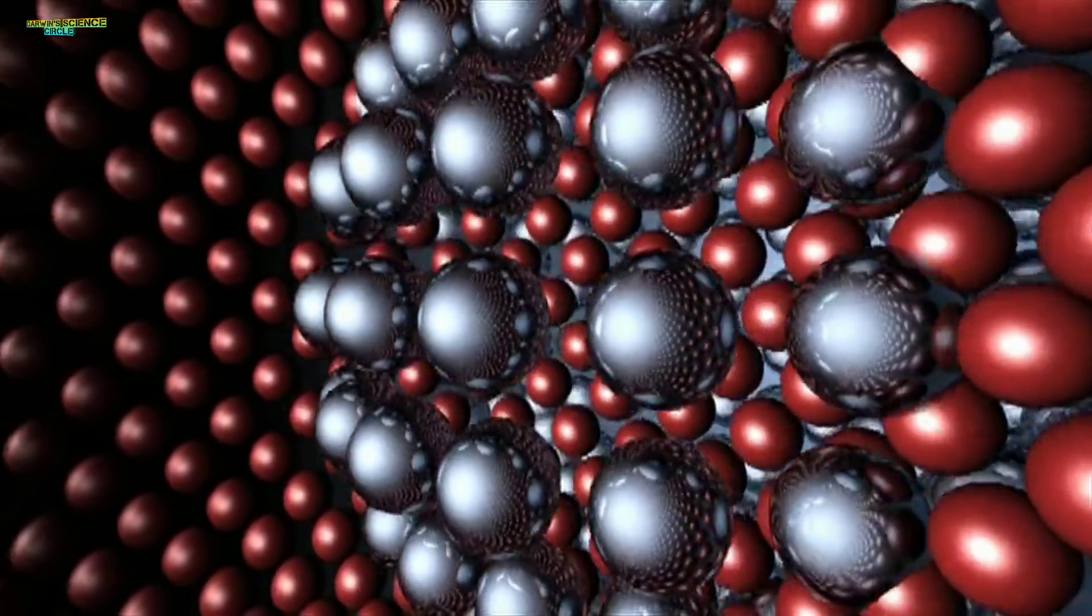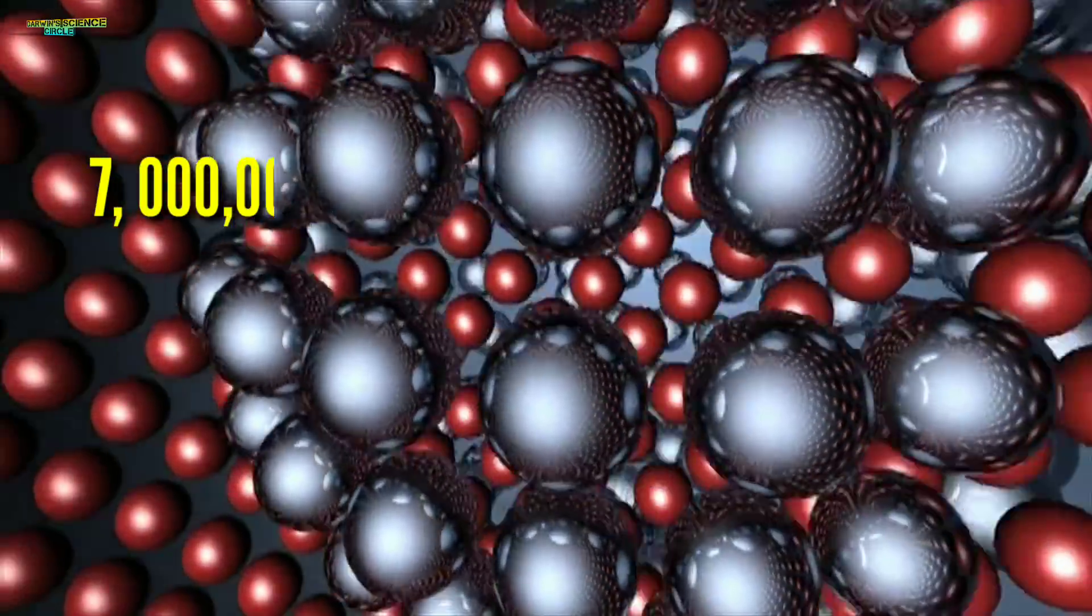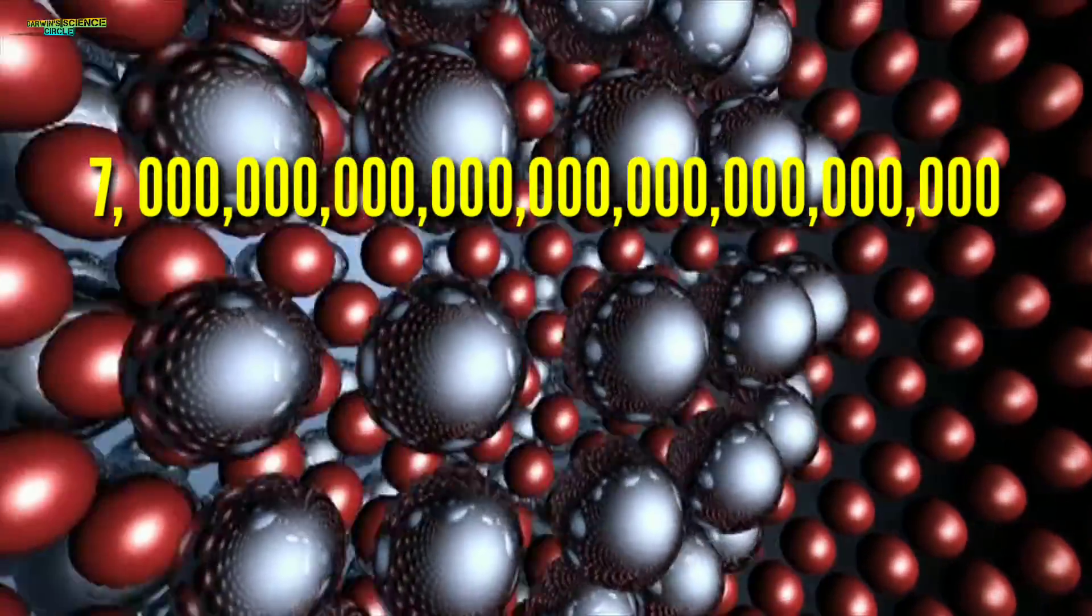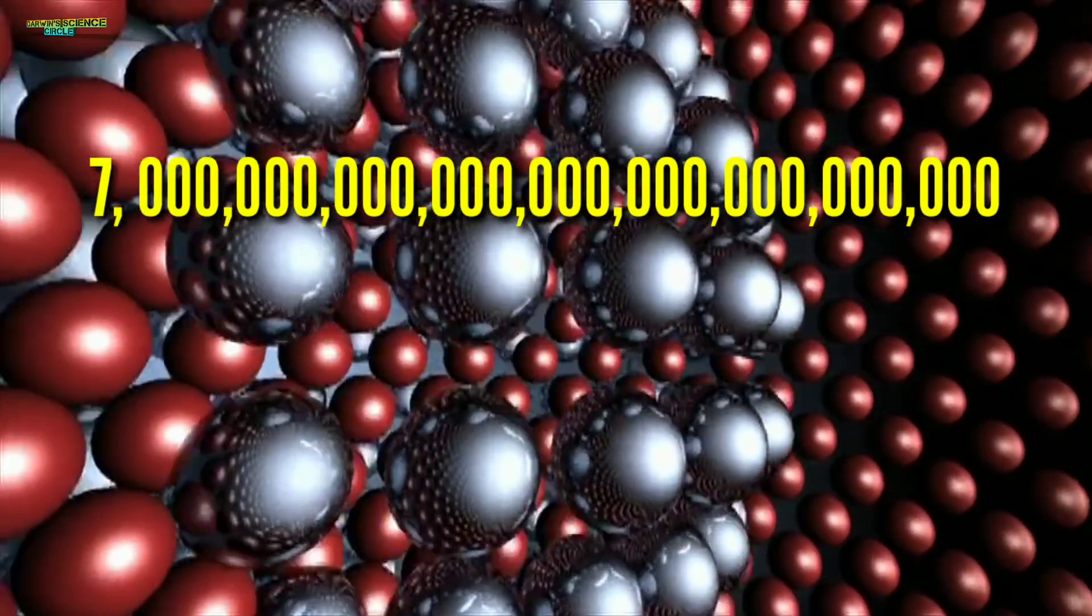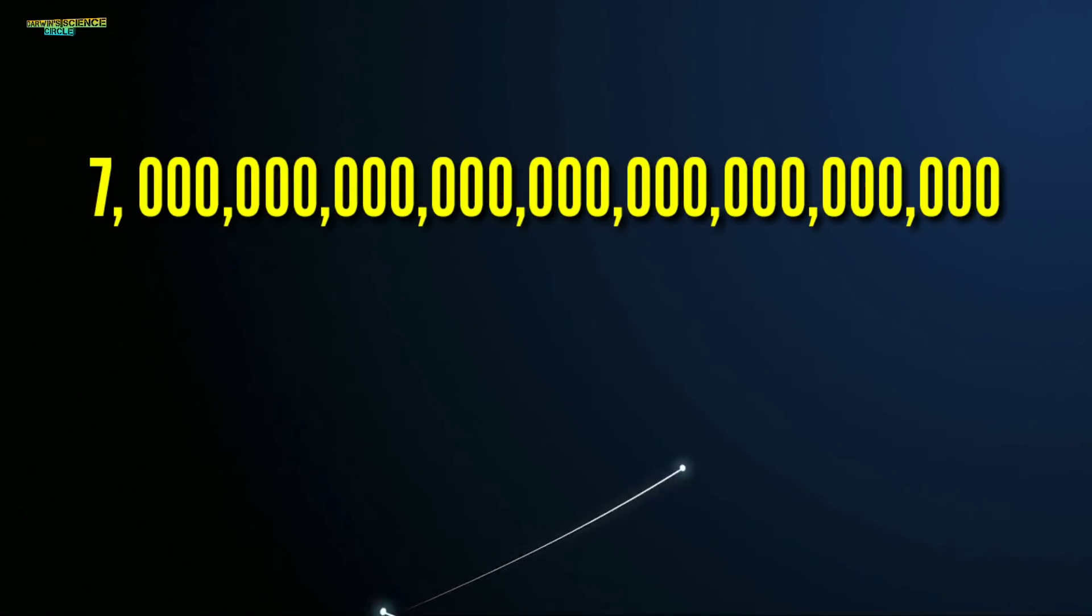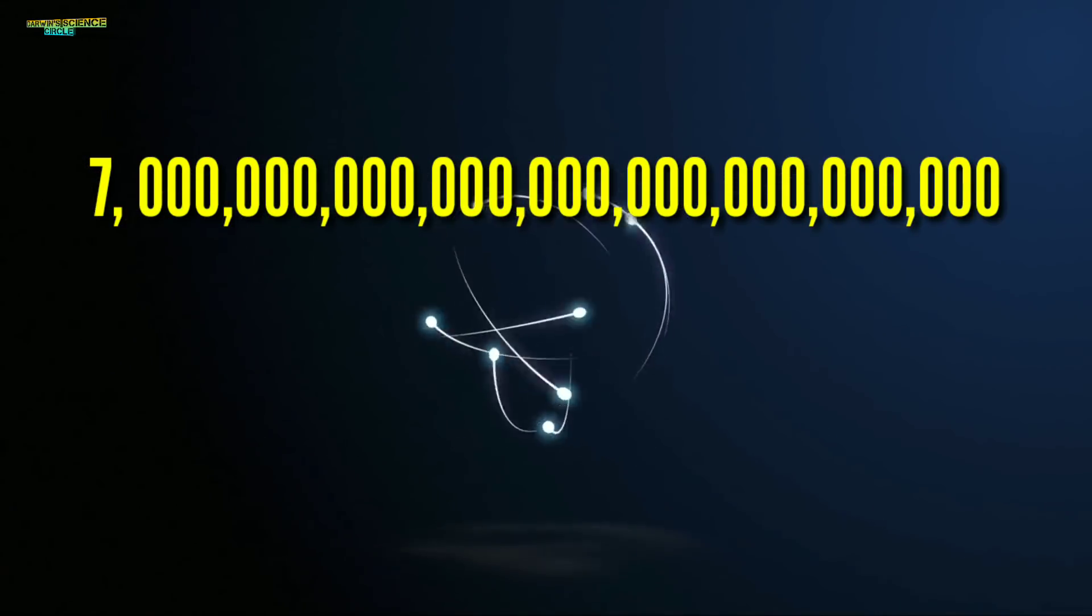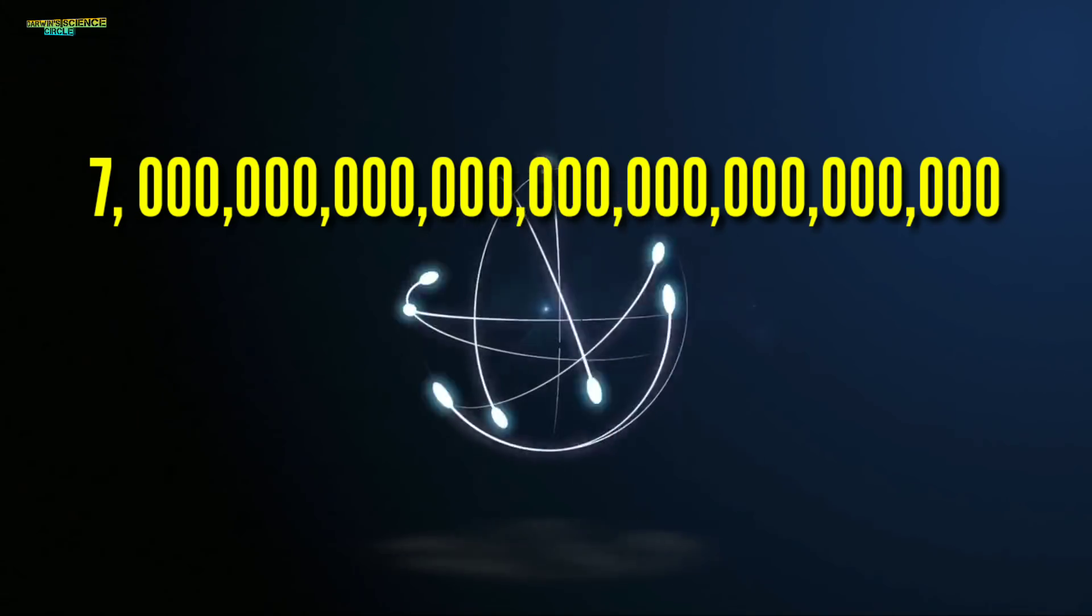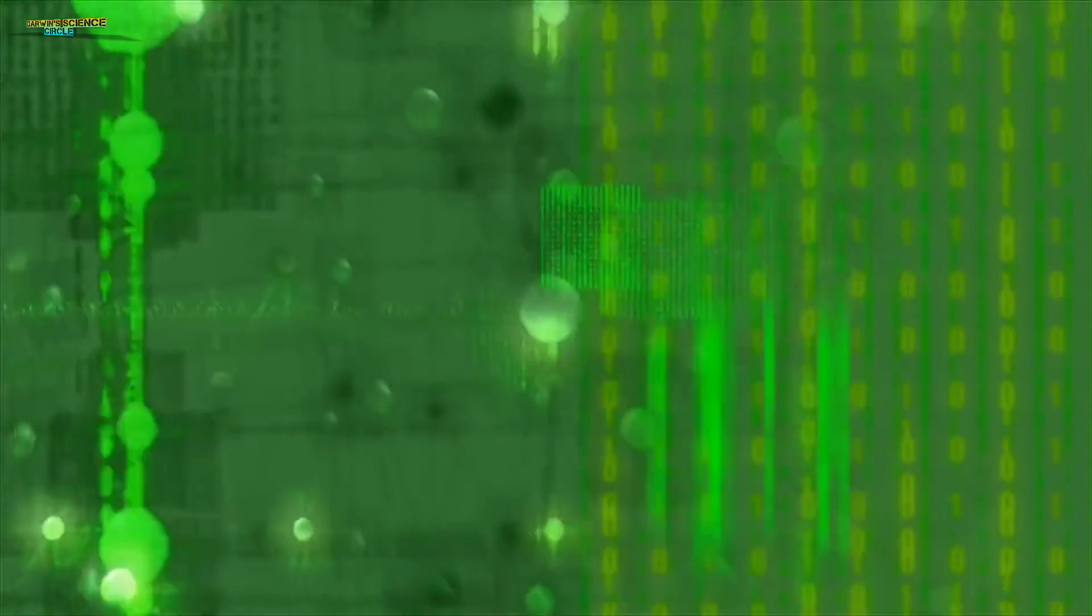At the atomic level, there are seven billion billion billion atoms in the human body. It's an enormous number.